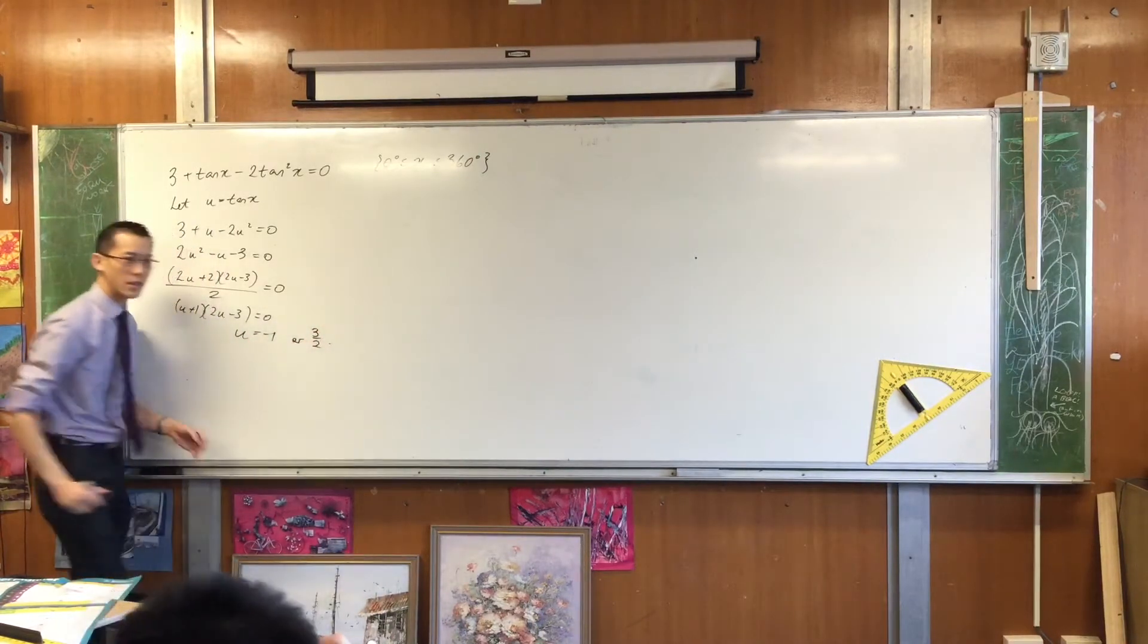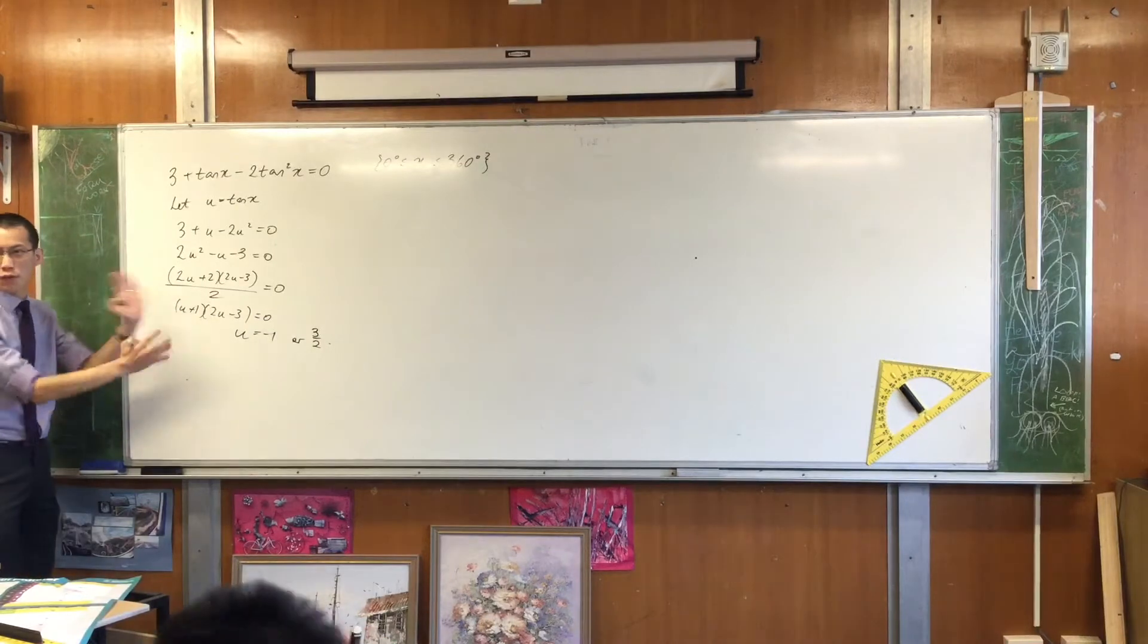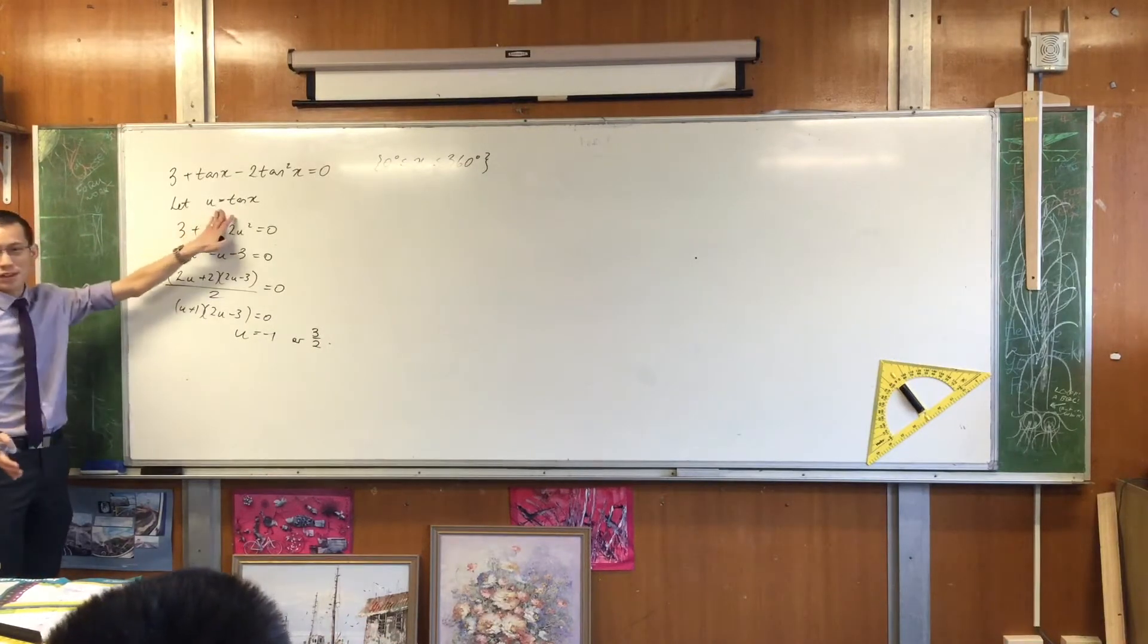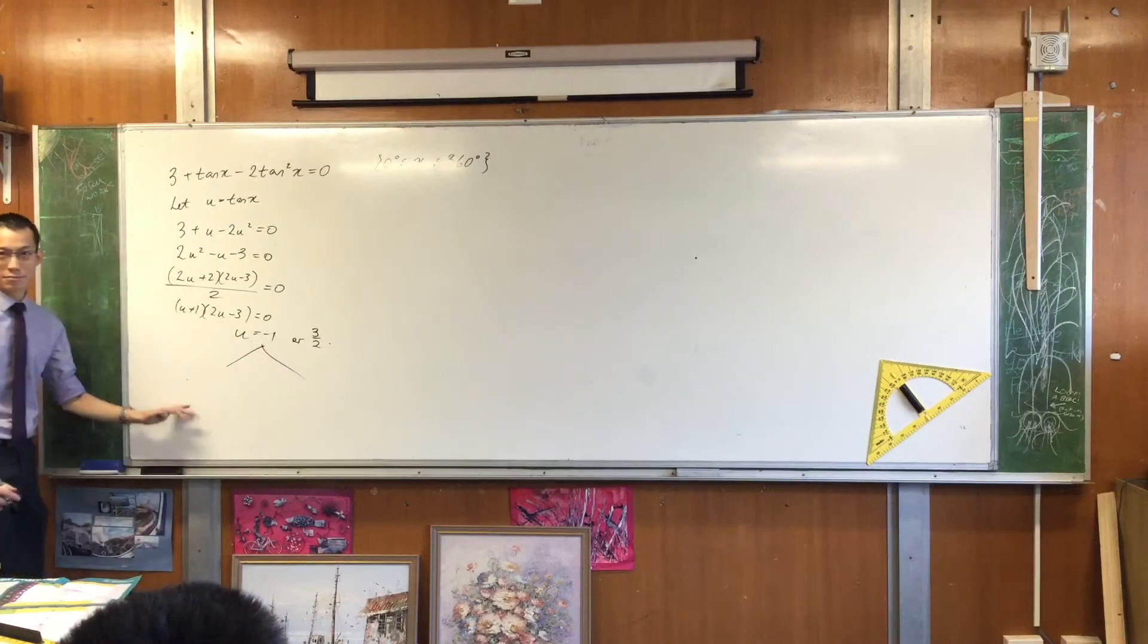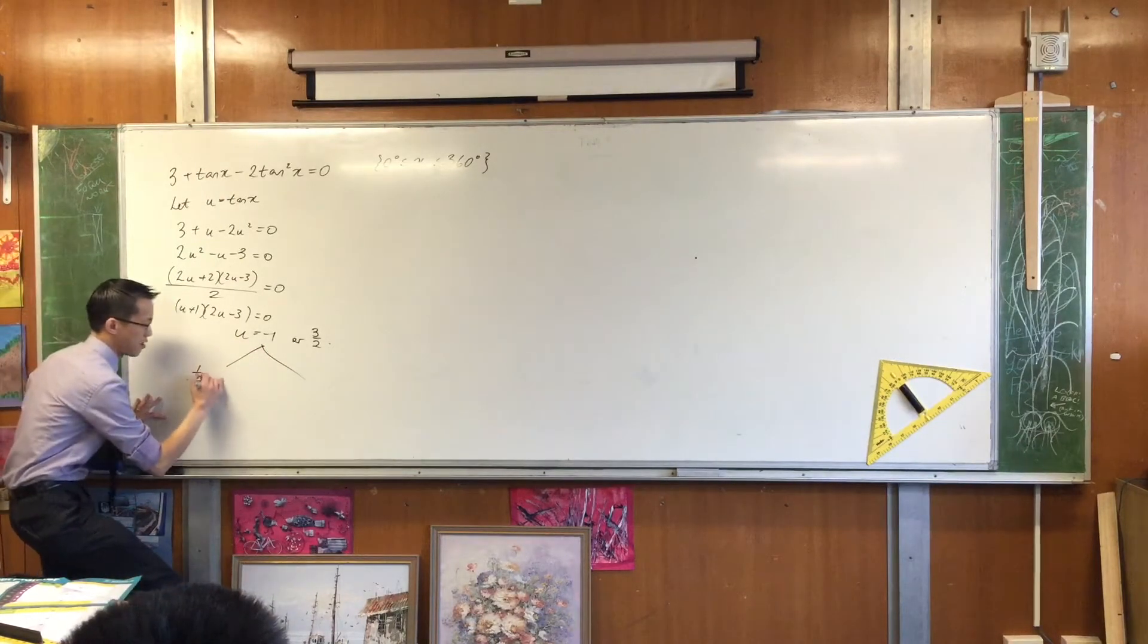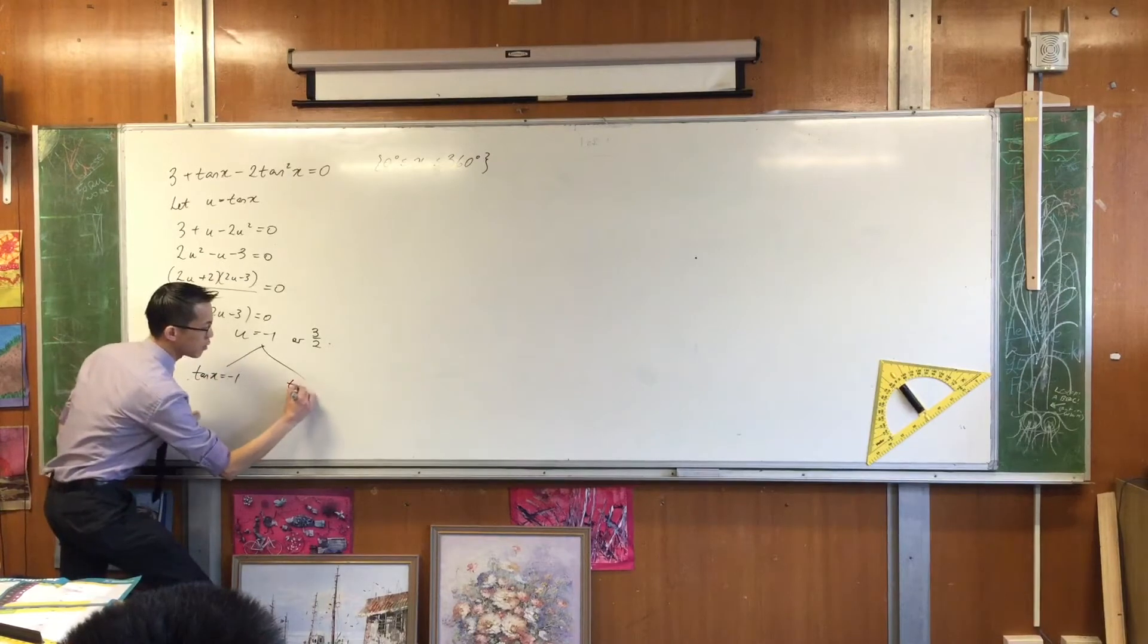So u is going to be negative 1, or... Very good. So at this point, I've solved for u, but u is just a standard for tan. So at this point, I'm going to write two different equations. I'm going to write this one, and this one.